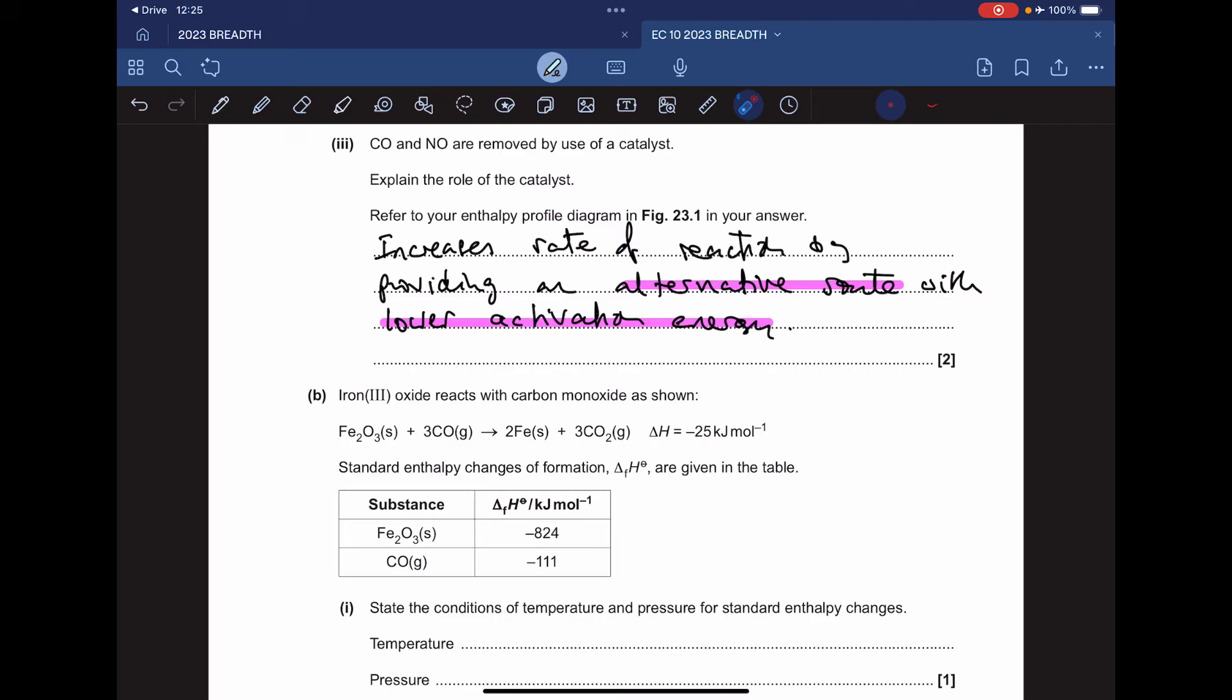Next, I've got to explain the role of the catalyst. We just need to say something like: it increases the rate of reaction by providing an alternative route with lower activation energy.